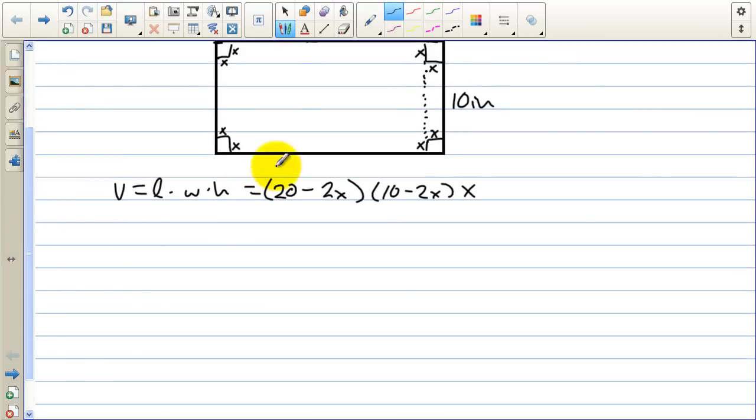Now we need to multiply this function out. So v of x equals, let's see, 200 minus 40x minus 20x, and then plus 4x squared, all that times x. So we have 4x to the third minus 60x squared and then plus 200x.